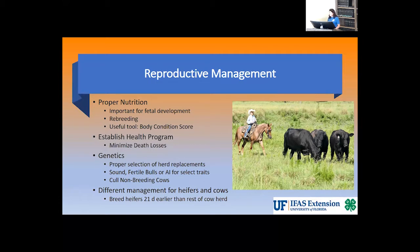Proper nutrition is important for breeding, rebreeding, as well as fetal development. This may be assessed using the body condition score. A body condition score of five is optimal for cows and six for heifers. The establishment of a health management program is important for the well-being of the animal and to minimize death losses. Visit with your local veterinarian to develop a plan that fits your herd.